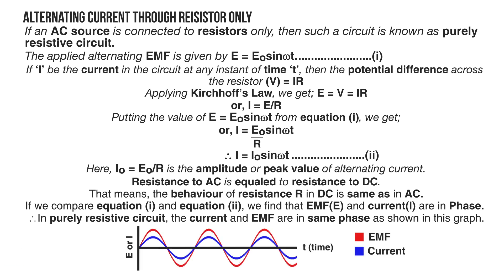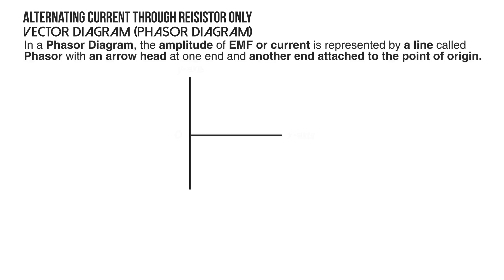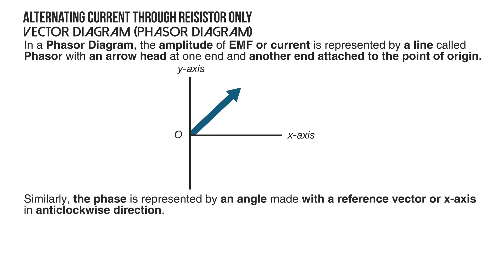Comparing equation 1 and equation 2, we find that E and I are in phase. Therefore, in a purely resistive circuit, the current and emf are in the same phase, as shown in this graph. There is another method to represent the phase relationship between alternating current and alternating emf — it is called a vector diagram, or more commonly a phasor diagram. In a phasor diagram, the amplitude of emf or current is represented by a line called a phasor, with an arrowhead at one end and the other end at the origin.